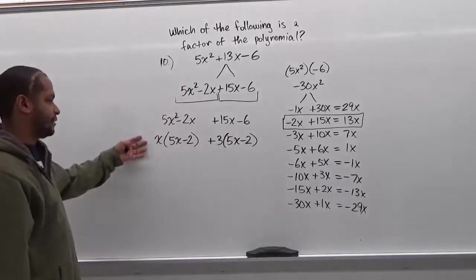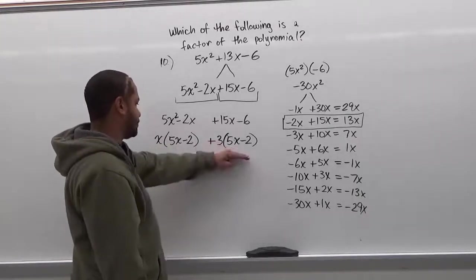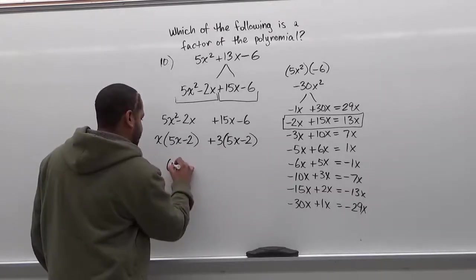Now that we did the first set of grouping, we're going to do the second set of grouping here. We're looking for the common factor within the two terms and here we see that it's 5x minus 2. And so we're going to factor out the 5x minus 2.